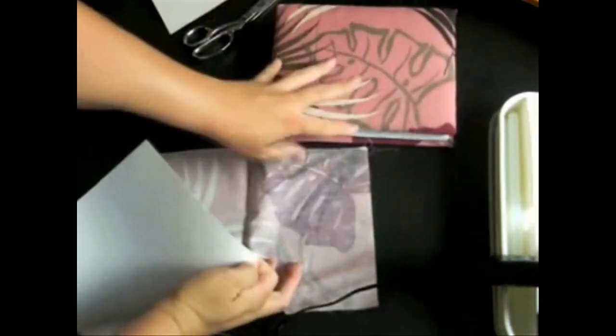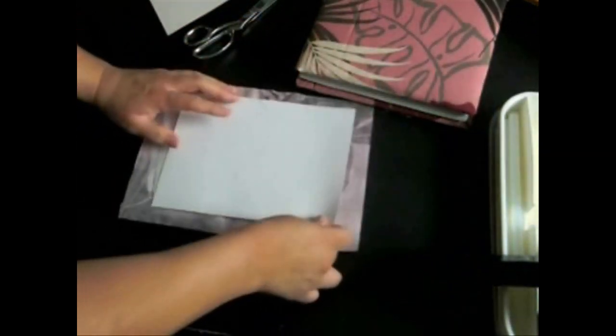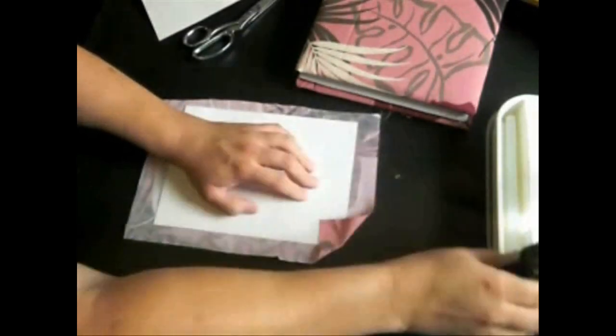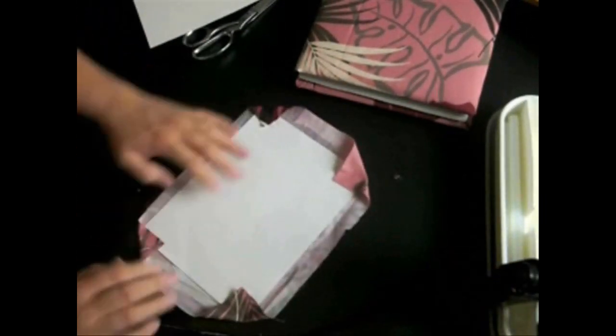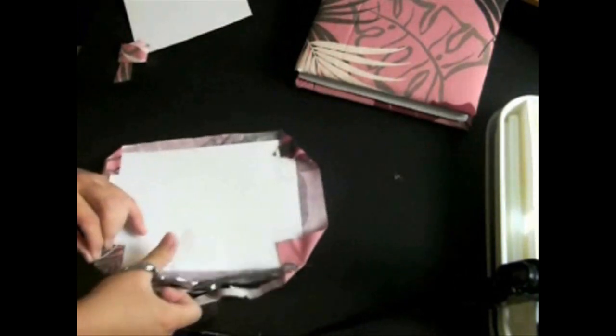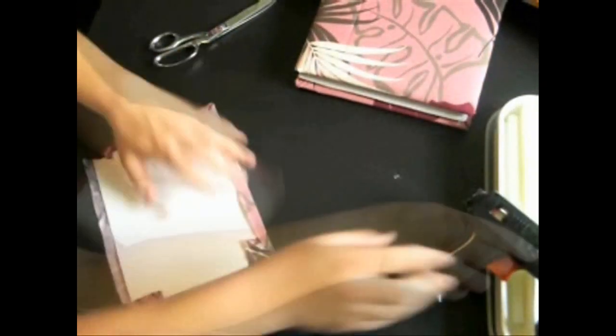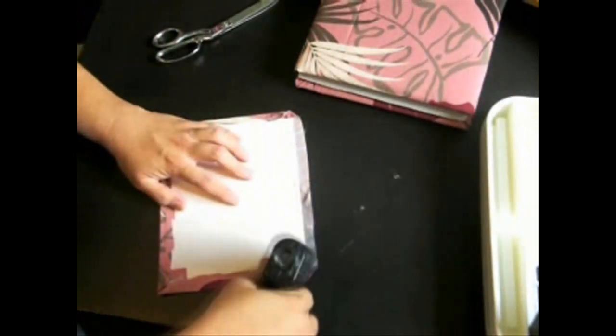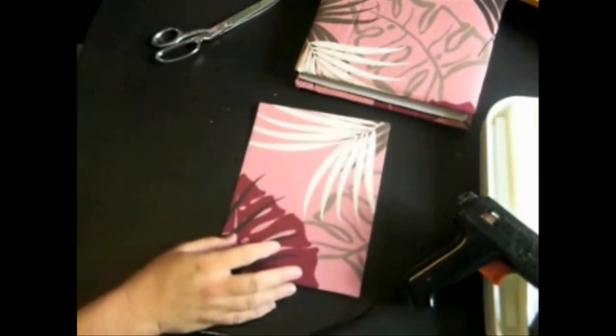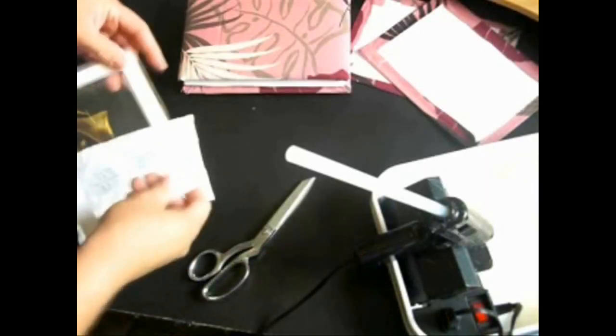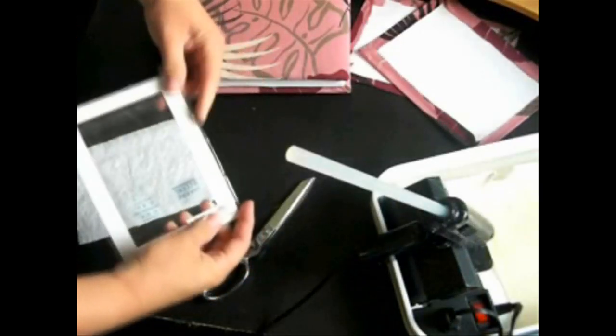Now we're going to go ahead and cover the poster board, material side down. Same thing, corners in. That's one side complete, do the second one as well.